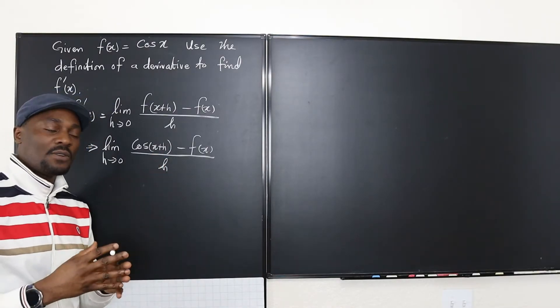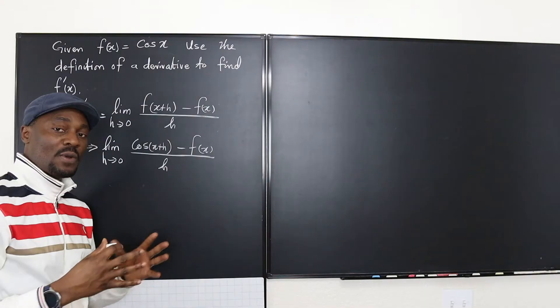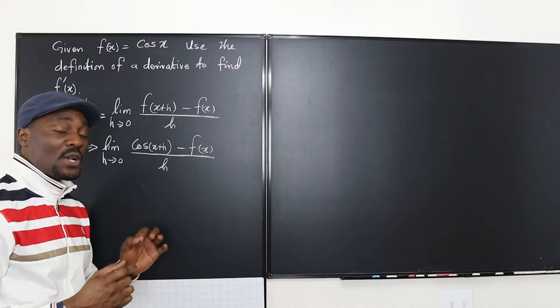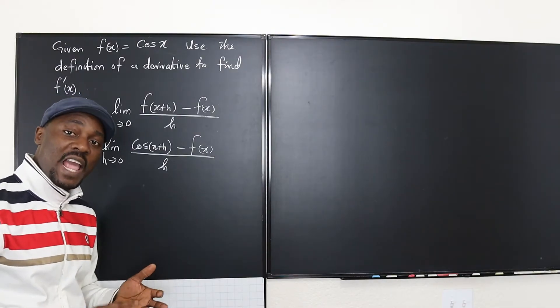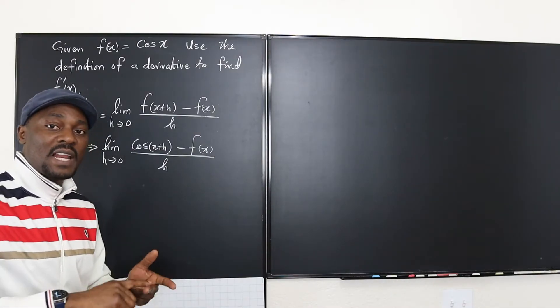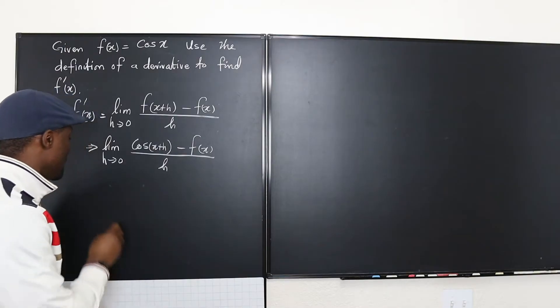Well we know that when we have the sum of angles for cosine, we have two angles added. Say we have cosine a plus b, we're gonna be having cosine a cosine b minus sine a sine b and that's what we're gonna be doing here.